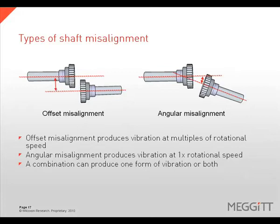There are two types of misalignment: offset or parallel misalignment, and angular misalignment. Offset misalignment will commonly produce a vibration response at multiples of rotational speed — 2 times, 3 times, 4 times, and 6 times are all common. Angular misalignment will commonly produce a vibration response at 1 times rotational speed, with the axial direction often being the highest in amplitude.